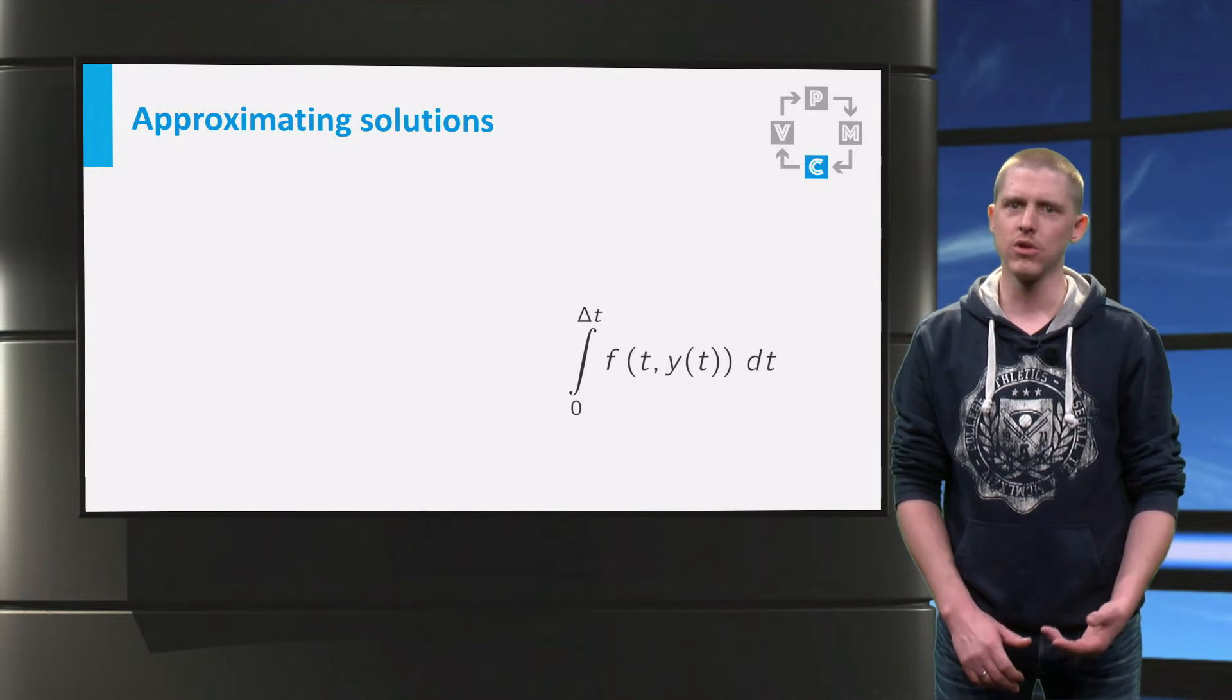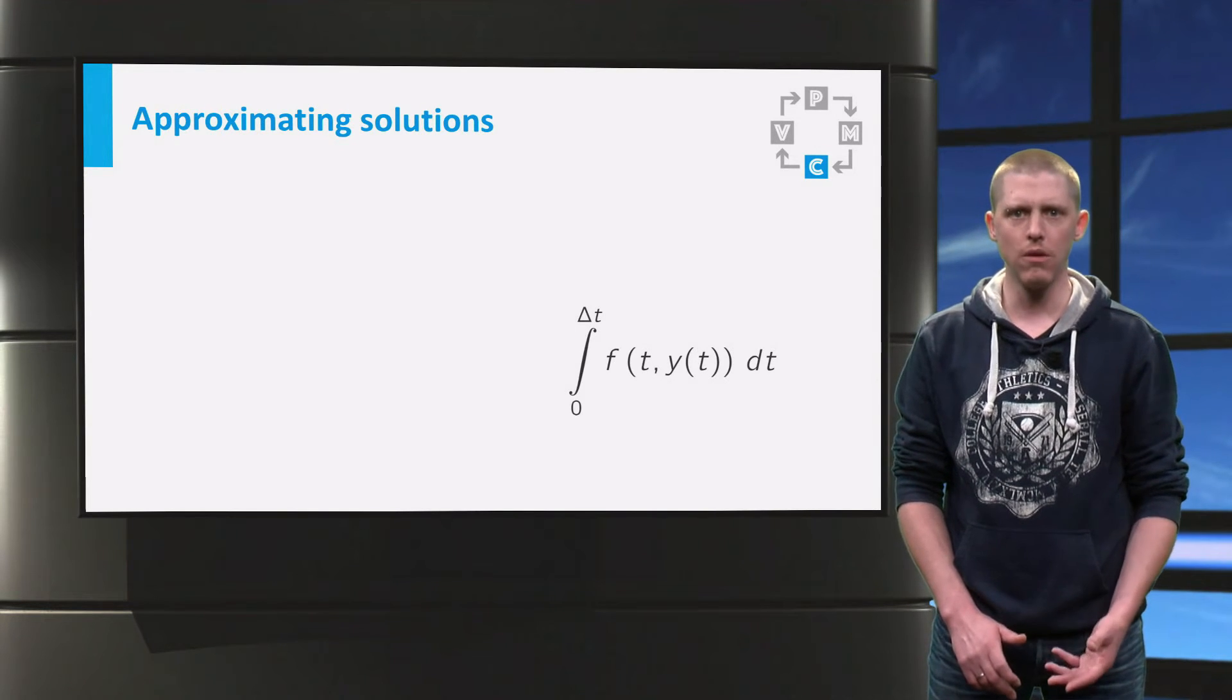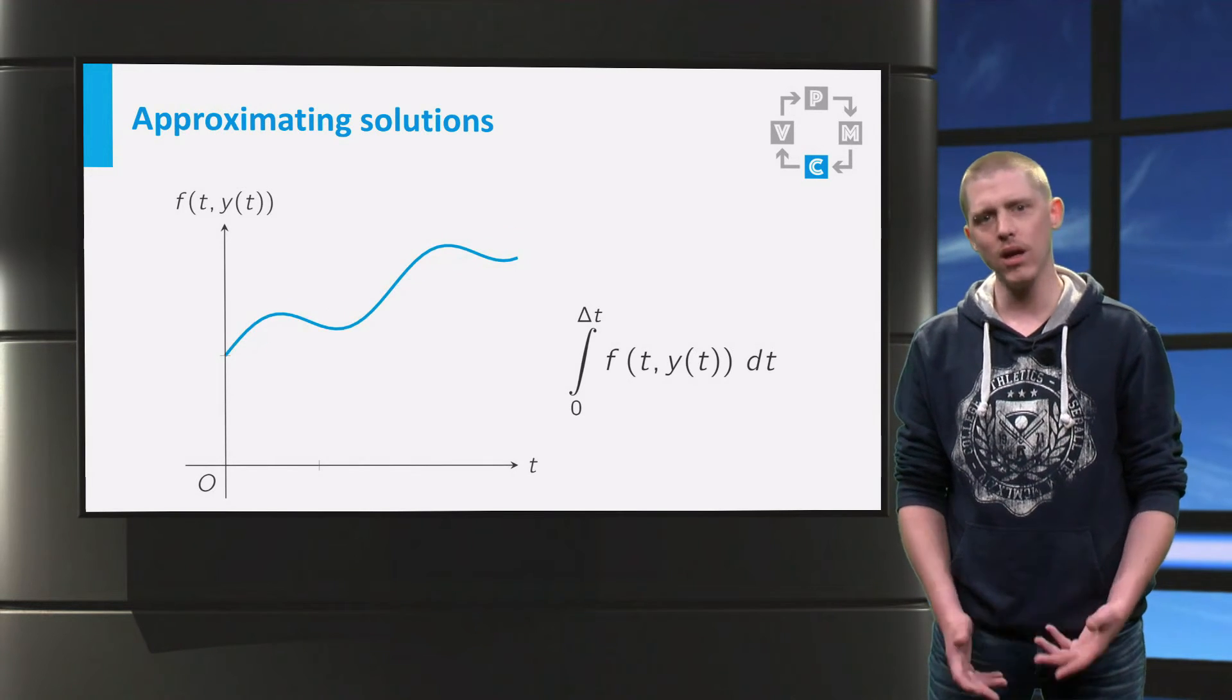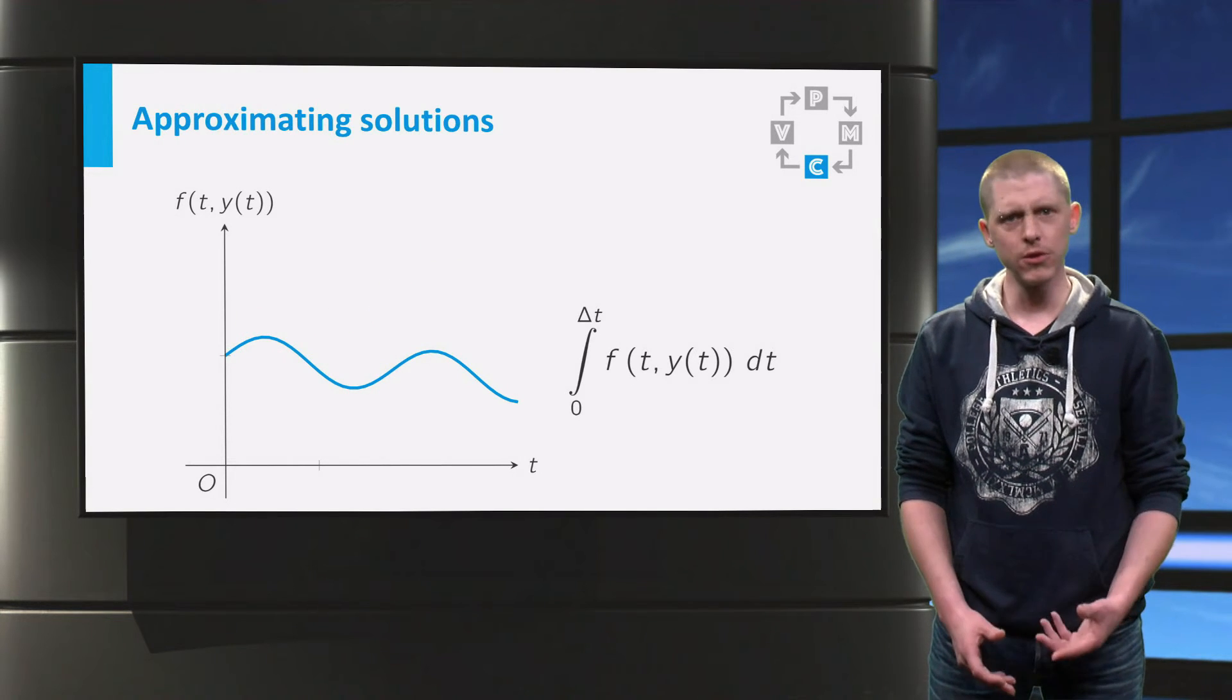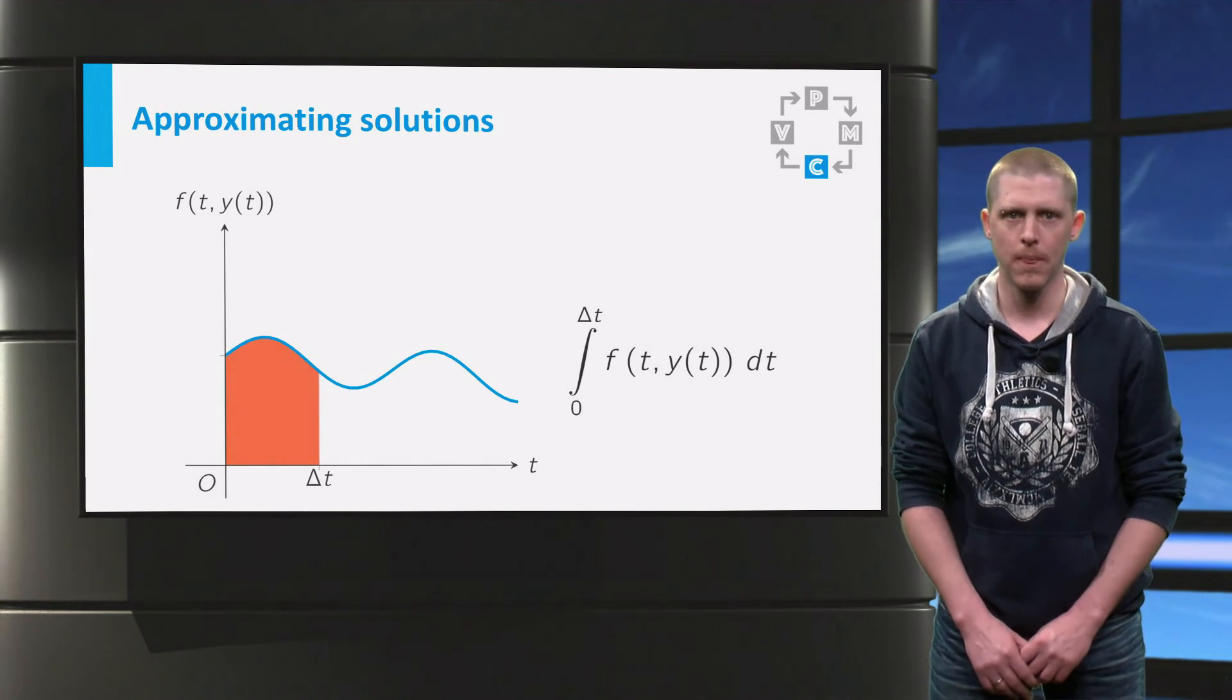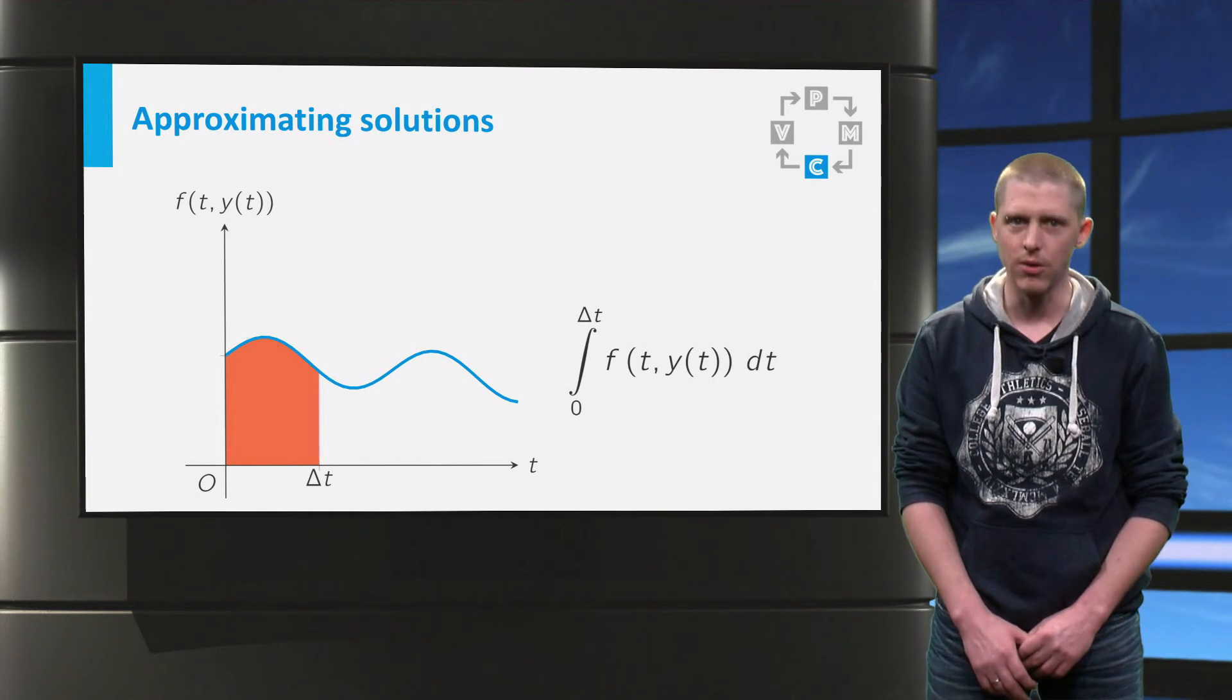First focus only on the right hand side function. If you would know y, we could make a graph of the right hand side as a function of time, which could look something like this, or like this, or like this. The integral from 0 to delta t over time t would then be this area under the curve. This area we do not know, so maybe we can approximate this area in some way using information we do know.